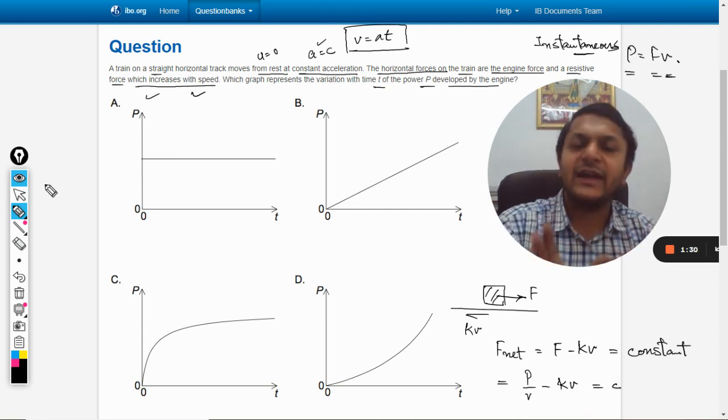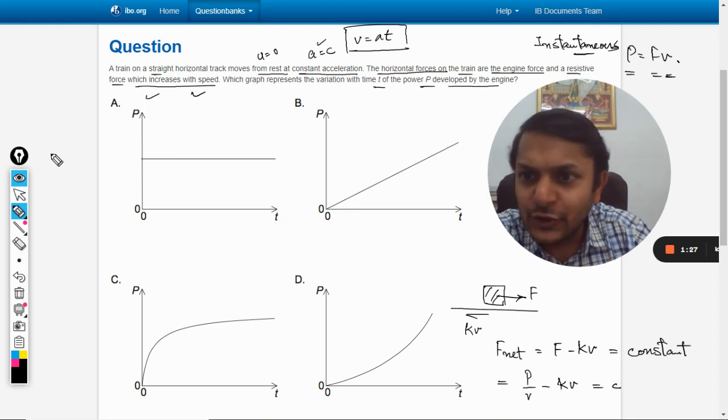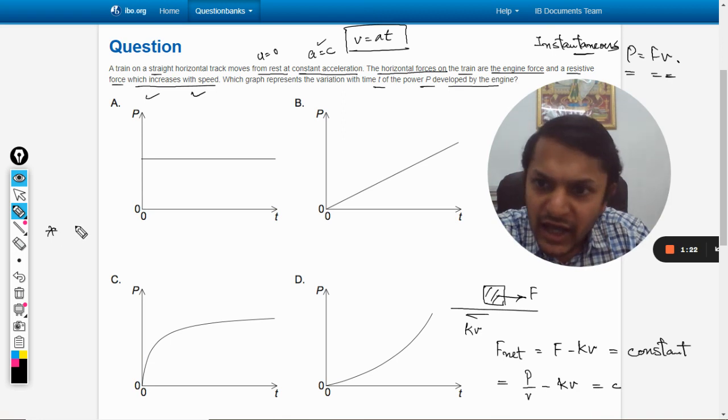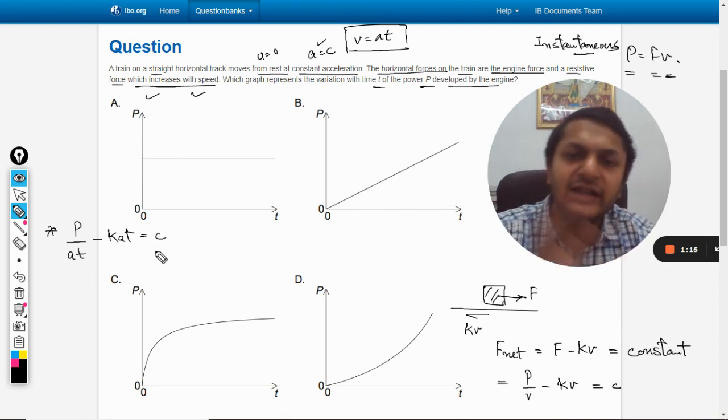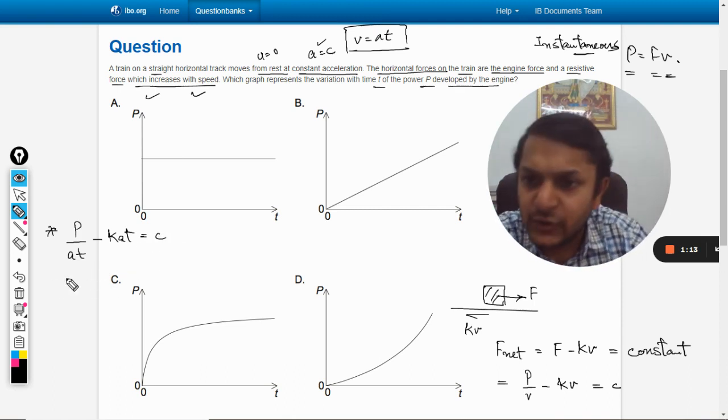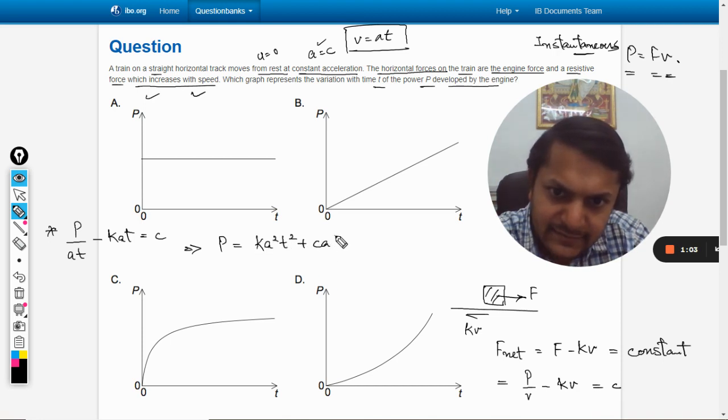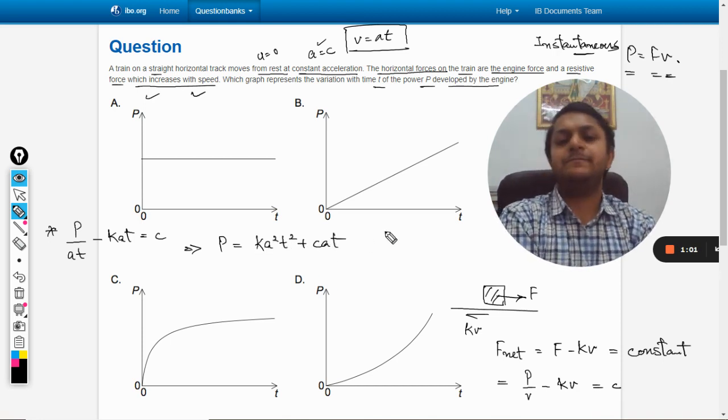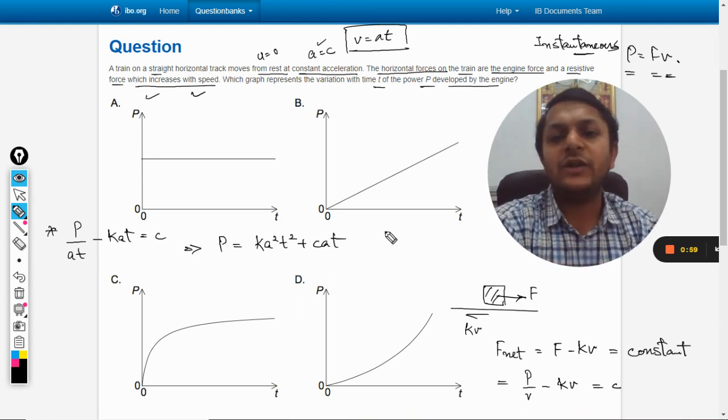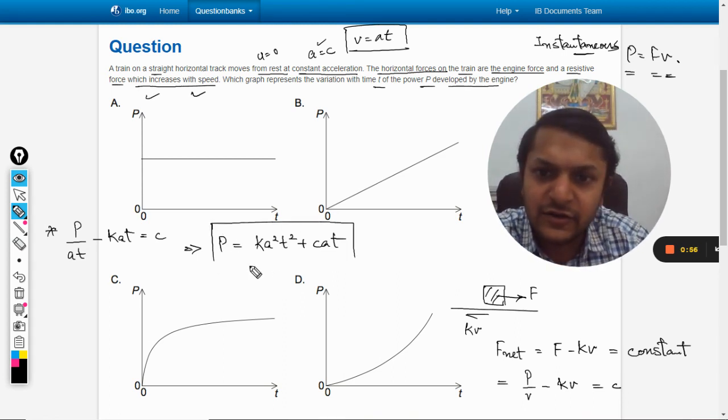Because of the lack of space, I'm not moving diagonally here. I will substitute v equals at. So P/v minus kv equals c. Multiplying at on both sides of the equation, we get P equals ka²t² plus cat. This is our final equation.